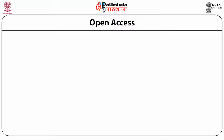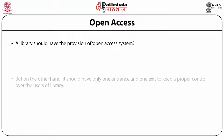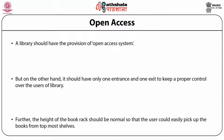Open Access. A library should have the provision of an open access system, but on the other hand it should have only one entrance and one exit to keep proper control over the users of the library. Further, the height of the book rack should be normal so that the user could easily pick up the books from the topmost shelves in the library.